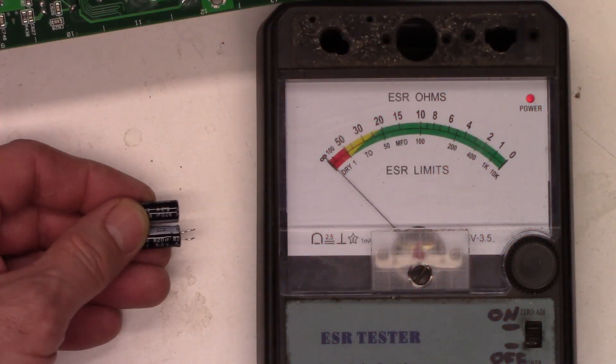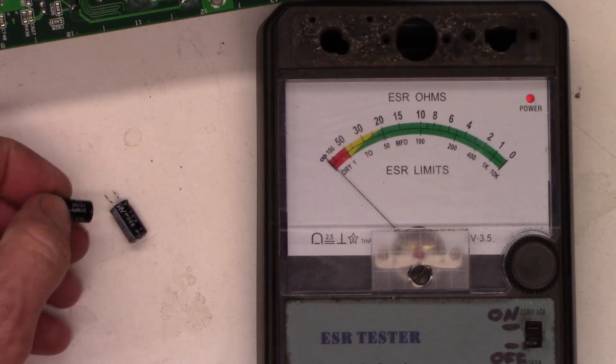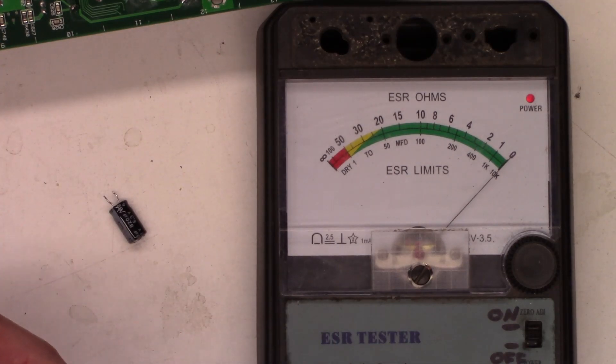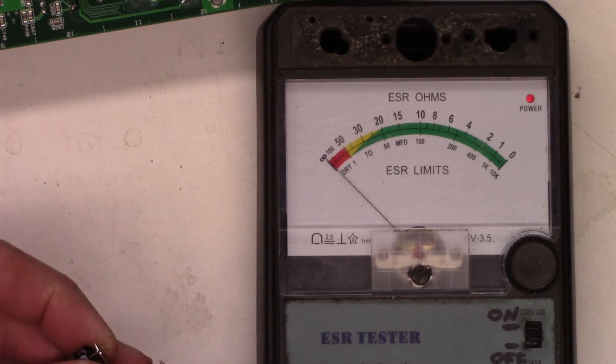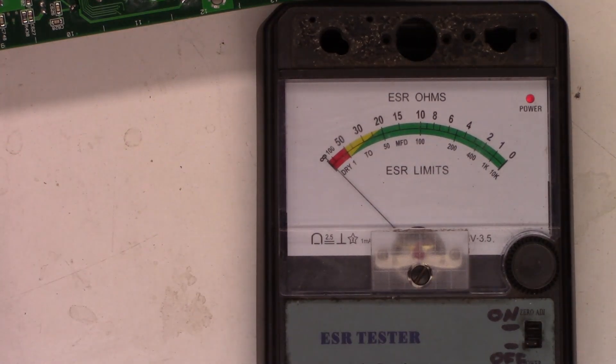Here's a couple more caps I pulled out. 820 microfarad, 6.3 volts. I ESR'd both of those. They appear to be on the satellite input amplifier assembly. This one checks fine, zero ohms. But I marked this one on the top as bad because it's bulged. About 40 ohms, definitely bad. So let's change those out.